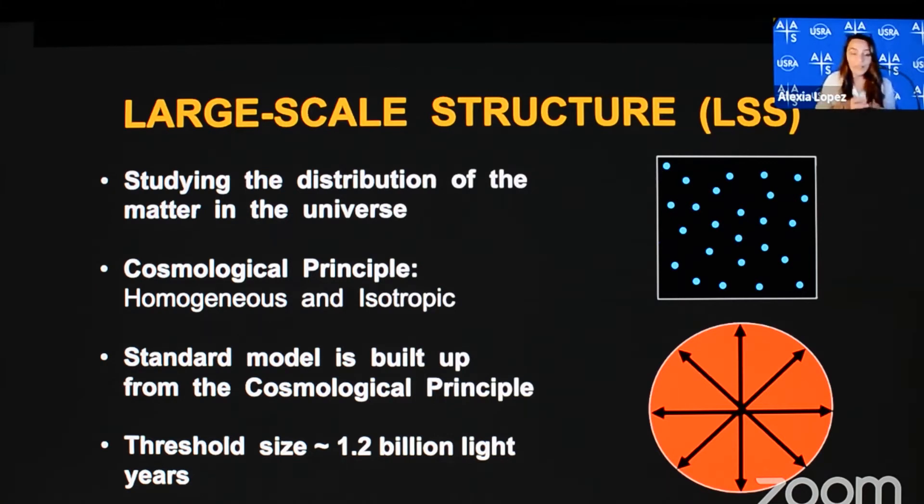So to emphasize, for the universe to be homogeneous on scales larger than 1.2 billion light-years, we must rarely find structures that exceed these scales. But the reality is there are already several large-scale structures exceeding these scales. And today I present a discovery which is almost three times the theoretical threshold.